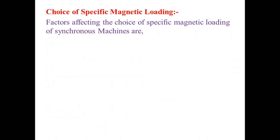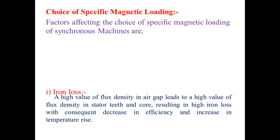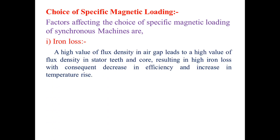Now, what are the factors affecting the choice of specific magnetic loading of synchronous machines? The first factor is iron loss. A high value of flux density in the air gap leads to high flux density in the stator teeth and stator core.